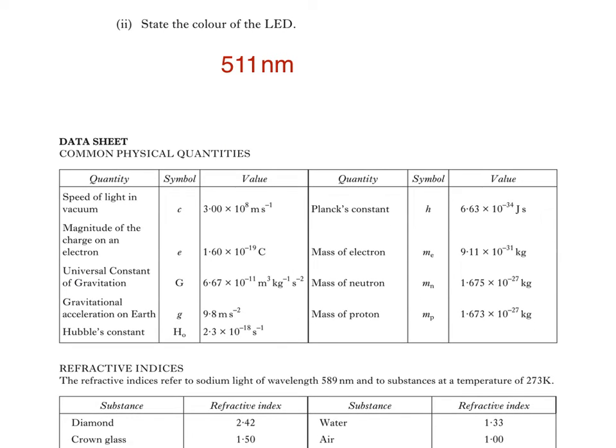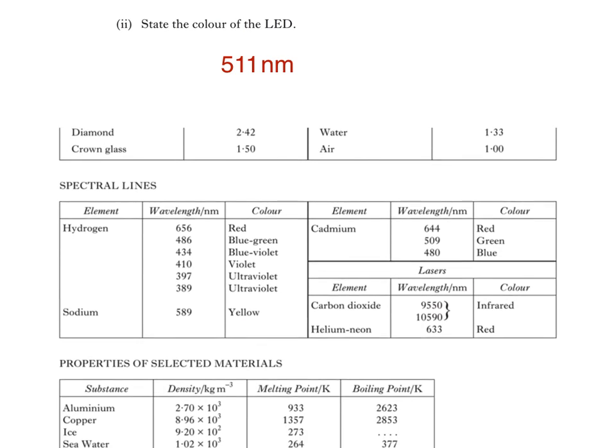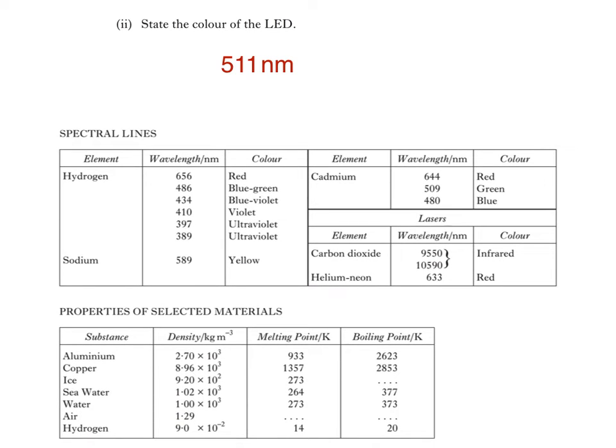This is the data sheet. Scrolling down it, you'll see that there's a list of some of the spectral lines associated with various elements. The closest wavelength to our calculated value is this one, 509 nanometres, which is noted as green. So that's our answer for part 2, green.